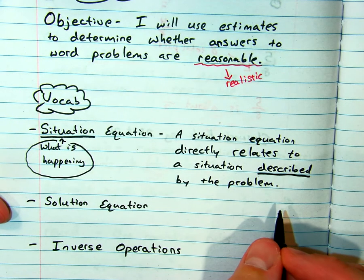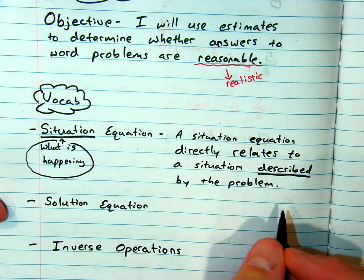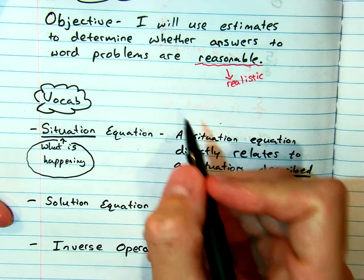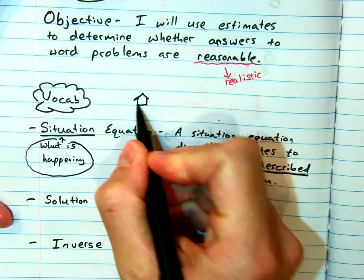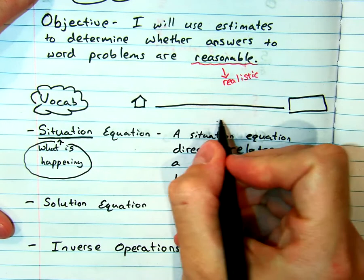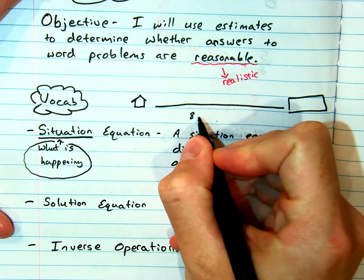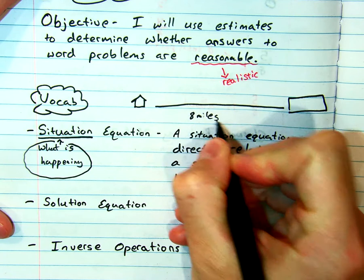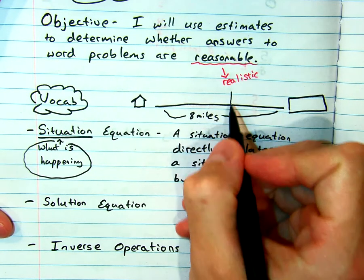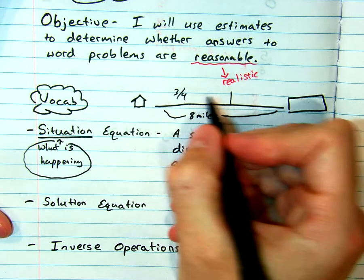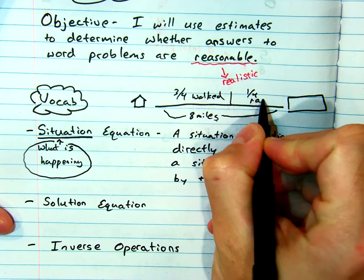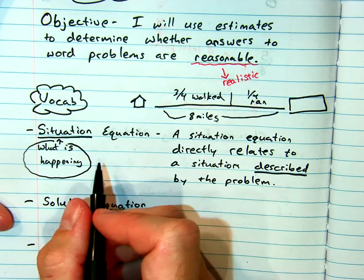So if the problem involves pizza, we might need to draw pizza. If it is a linear distance question, we might want to draw the distance from home to school. Let's make a bigger building. We want to define how much is in between. Let's say the distance is eight miles. So we want to know what the whole distance is and say three quarters walked, one quarter ran. So we want to actually sketch it out and figure out what's the situation.